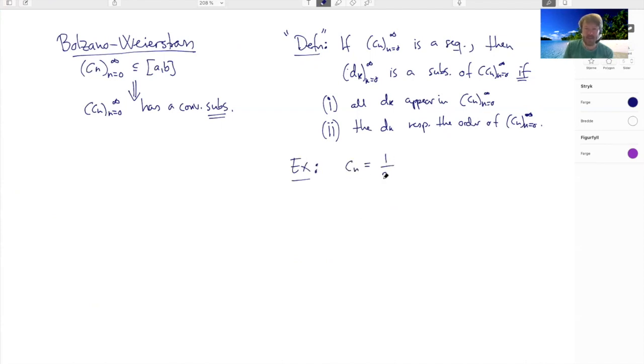If you have a sequence here, cn equals one over two to the n, n goes from zero to infinity. How can we choose a subsequence? First, let's write out a couple of terms here and so forth. If I do dk equals one and then an eighth and then one over 32, then this is a subsequence because every term here belongs to the sequence and they respect order.